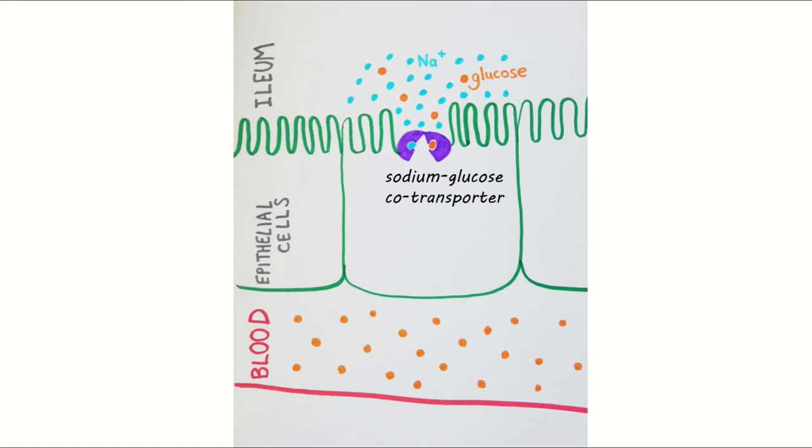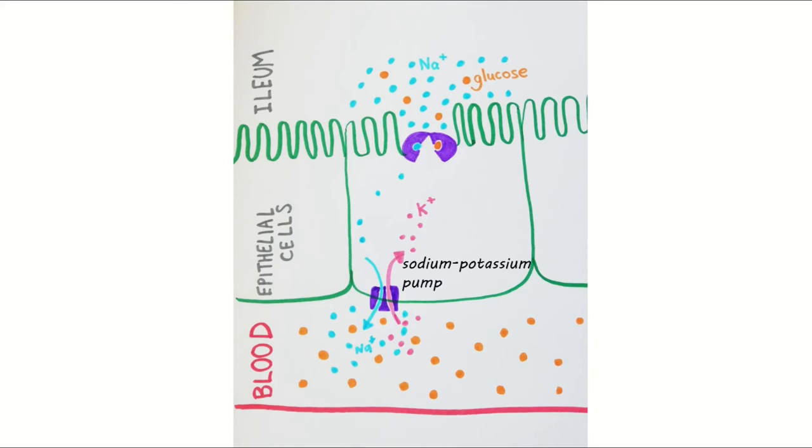The concentration gradient of sodium ions is maintained by a sodium-potassium pump. This protein pumps sodium out of the cell, and at the same time pumps potassium into the cell, all using energy from ATP. The result is that the sodium concentration inside the epithelial cell remains very low, and so the co-transporter at the top can continue to work.